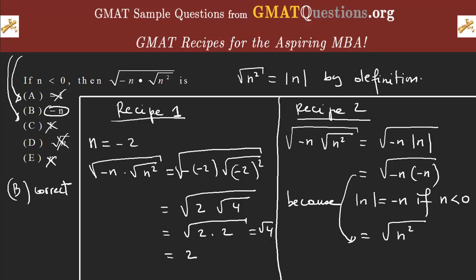So, the root of n squared becomes |n|, and since n is negative, |n| equals negative n. This confirms that the expression equals negative n, which is answer choice B. This approach may feel circular, and it is a bit more advanced. Most of you will prefer Recipe 1, and I don't blame you. Again, this is Dakarazoo — thank you for watching.